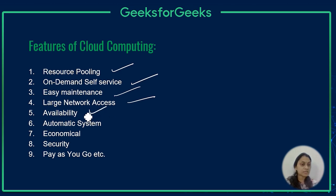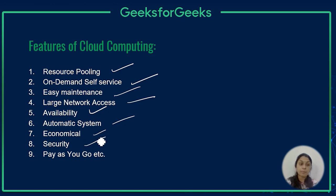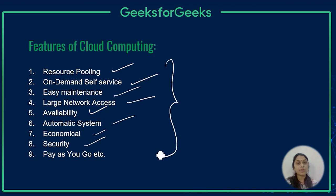Availability is another feature — there is a lot of availability with no limit; you use as much as you want and pay for it. Automatic system services are there, and cloud computing is economical. They also provide a high level of security compared to local servers, and there is a pay-as-you-go model. These are all the different features of cloud computing.